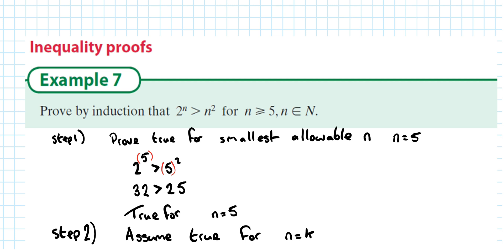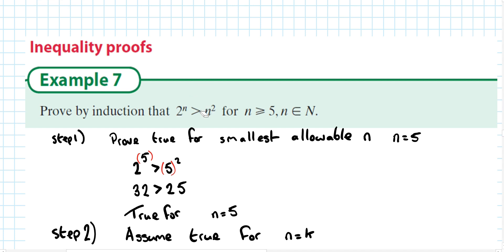How do we identify that it's an inequality question? Quite clearly we can see that there is an inequality in the question. So what we're trying to do is show that the left hand side is greater than the right hand side.